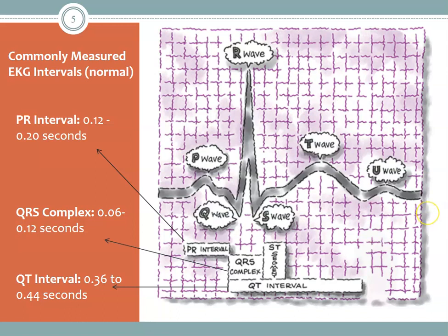We have a P wave, a QRS wave, a T wave, and a U wave. We also look at the intervals — the time and distance between when one occurs and the other — so we understand the morphology and can identify any variance. The PR interval normal range should be 0.12 to 0.20 seconds. The QRS complex should range from 0.06 to 0.12 seconds, and the QT interval should range from 0.36 to 0.44 seconds.